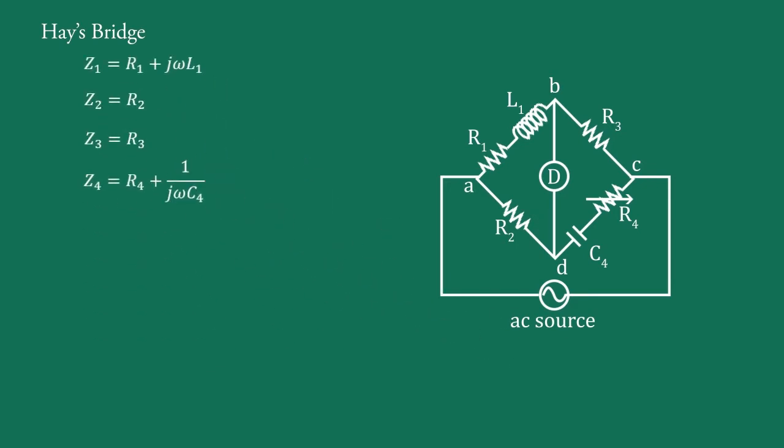The bridge balance condition for the basic bridge is z1·z4 equals z2·z3. Substituting the values of these relations, we get: (R1 + j·omega·L1) into (R4 + 1 upon j·omega·C4) equals R2 times R3.